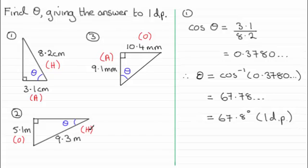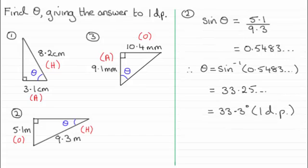Now for question number two, for the opposite and hypotenuse, that was the sine ratio. It would be the sine of angle theta would be the opposite side over the hypotenuse. Sine theta equals 5.1 divided by 9.3, which is 0.5483 and so on. And then taking the inverse sine to both sides gives you 33.25 and so on. And to one decimal place, that's going to be 33.3 degrees.